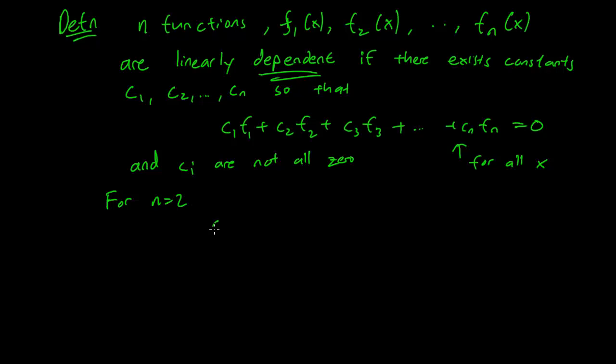Let's see what happens here. For n equals 2, we have c1f1 plus c2f2 equals 0, and c1 and c2 are not both zero. Say c1 is non-zero. Then you can write this as f1 equals minus c2 over c1 times f2. So in other words, f1 is a constant multiple of f2. So you can see that the definitions for n equals 2 and n equals whatever are actually the same definition.